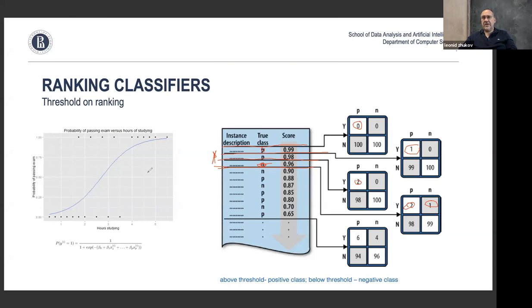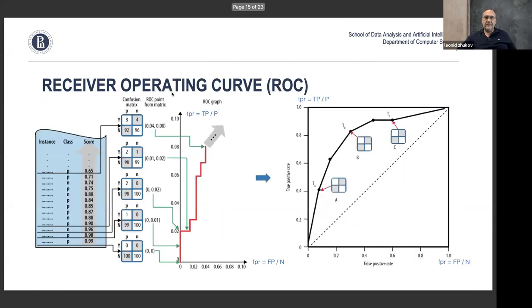The confusion matrix is not absolute — it depends on the threshold level you select. That threshold is a parameter you choose. By sliding the threshold, we can recalculate the true positive rate and false positive rate for each position and plot these on a TPR vs. FPR graph, getting a set of data points each corresponding to a particular regime of your classifier.